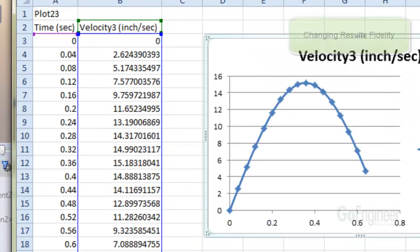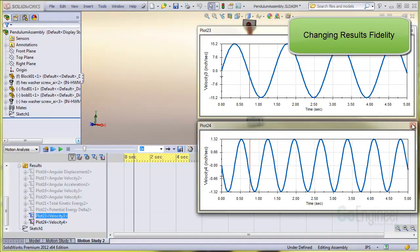Now you might notice the data points on the chart. They are separated by 40 milliseconds. What if you wanted better fidelity in the calculation, say, every 20 milliseconds?